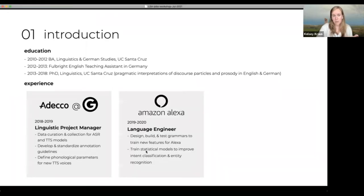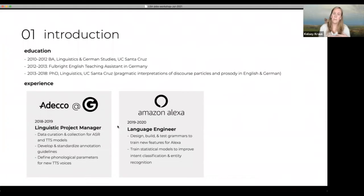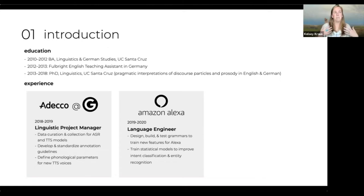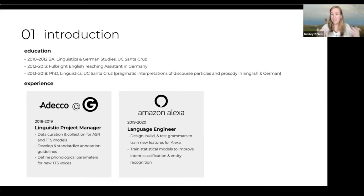After that contract position, I moved on to a full-time position at Amazon, where I was a language engineer. Language engineers work on the opposite side of the speech track — whereas at Google I worked on production of the assistant's voice, at Amazon I worked on the interpretation of that voice. I helped design, build, and test grammars to train new features for Alexa Auto, specifically a competitor to Google Maps. If you say 'Alexa, what's the shortest distance between Santa Cruz and San Jose' — that's a feature I helped implement.